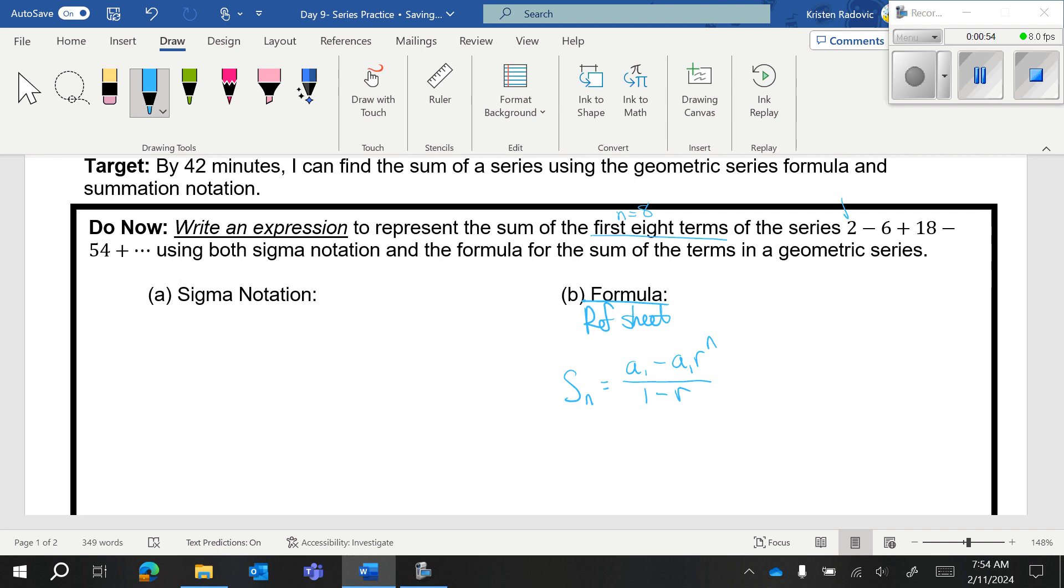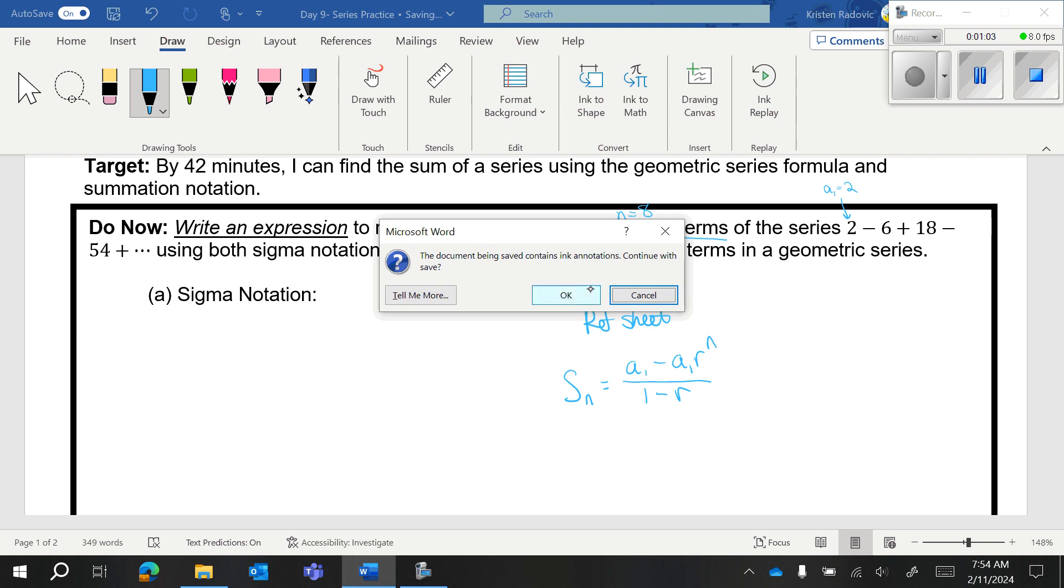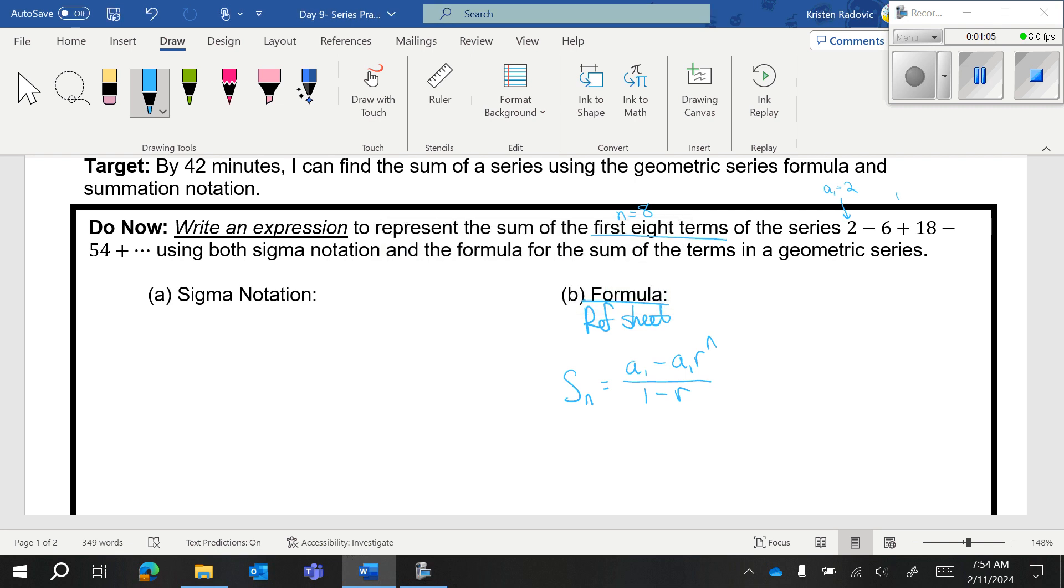The first term is 2, A sub 1, and then the pattern, this is geometric, so we're multiplying by a common ratio. The pattern is that we're multiplying by negative 3. So I'm going to put R equals negative 3.